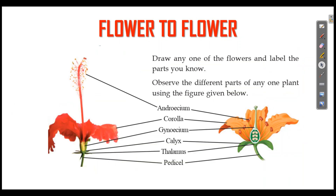Another important question: draw any one of the flowers and label the parts. When you label the flower, the parts are Androecium, Corolla, Gynosium, Calyx, Thalamus, and Pedicel. P is Pedicel, T is Thalamus, C is Calyx, G is Gynosium, C is Corolla, A is Androecium.